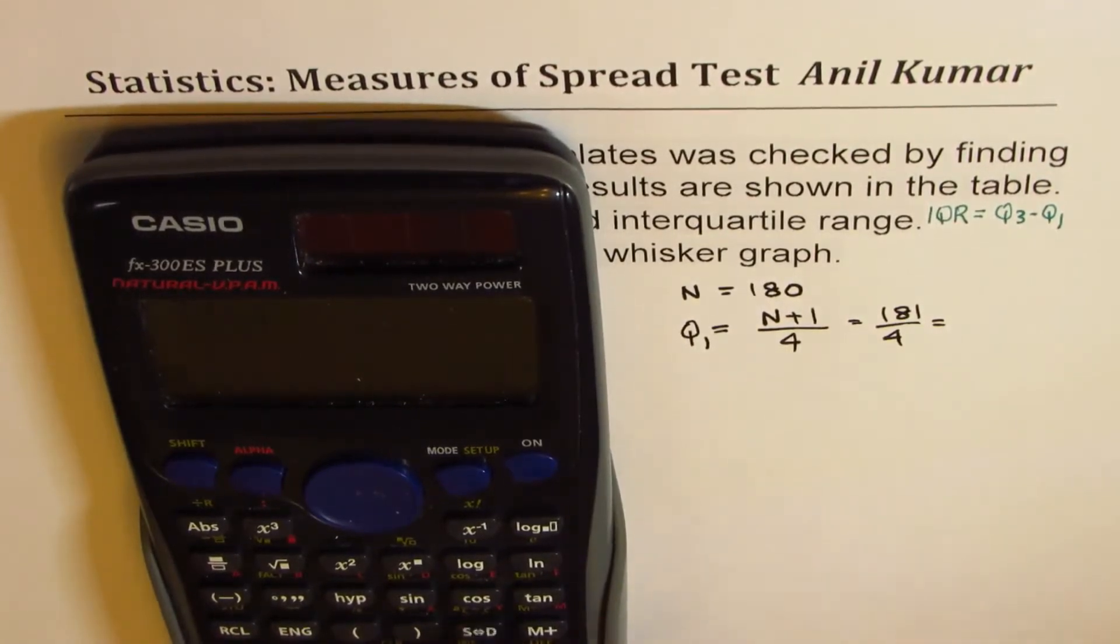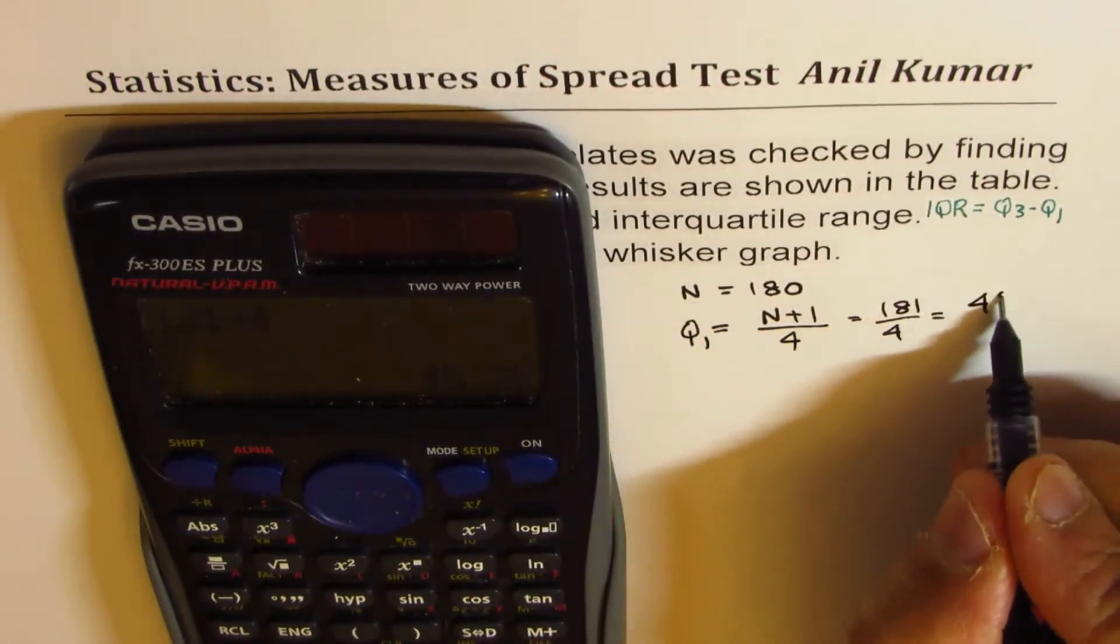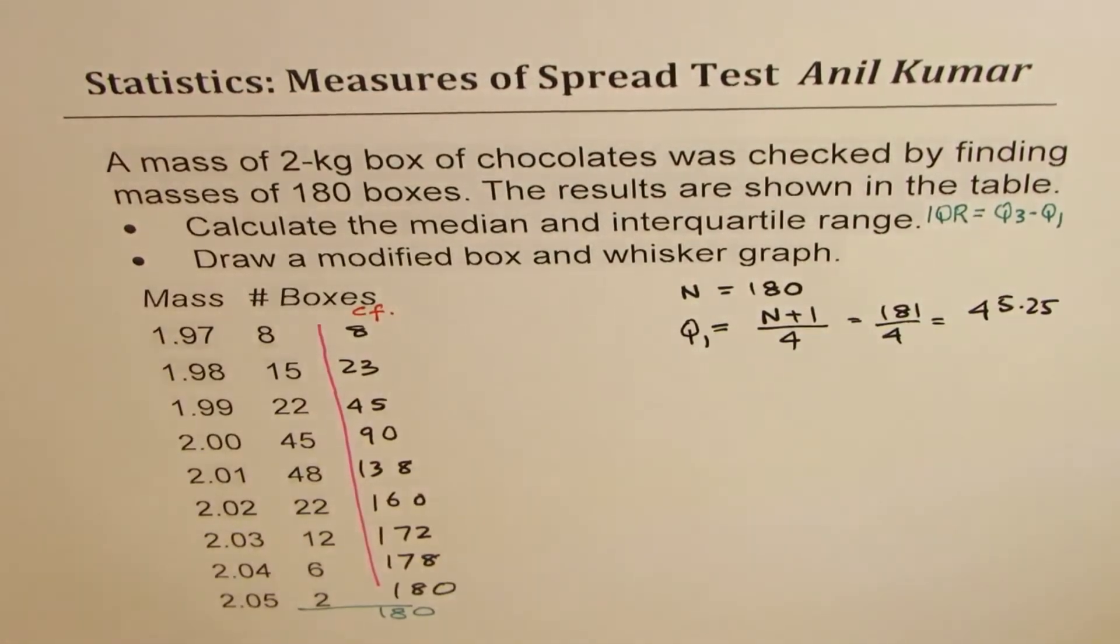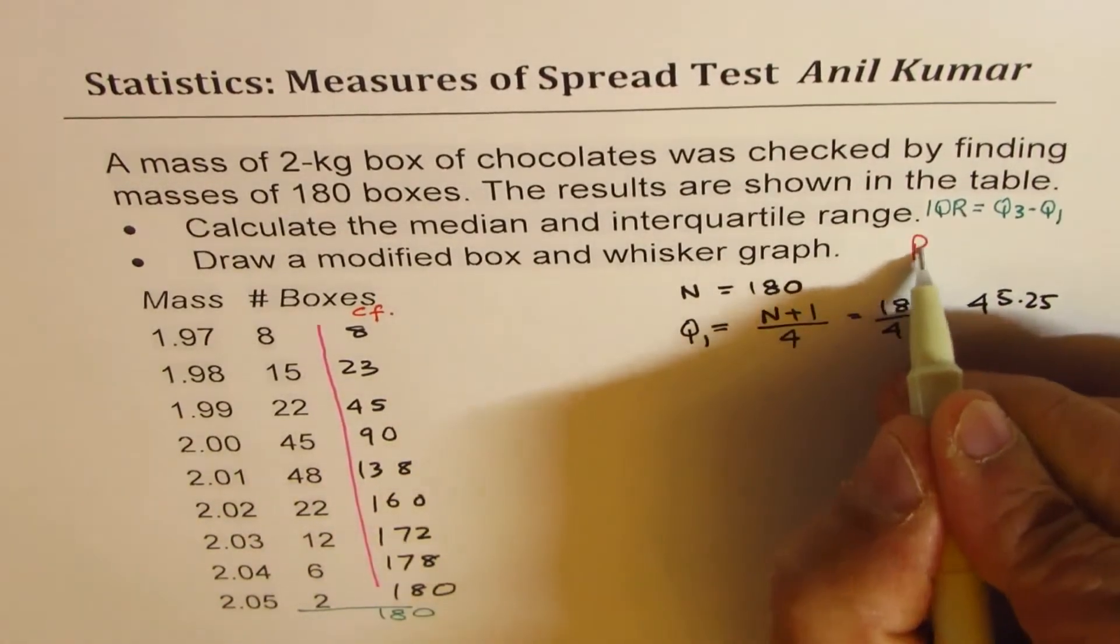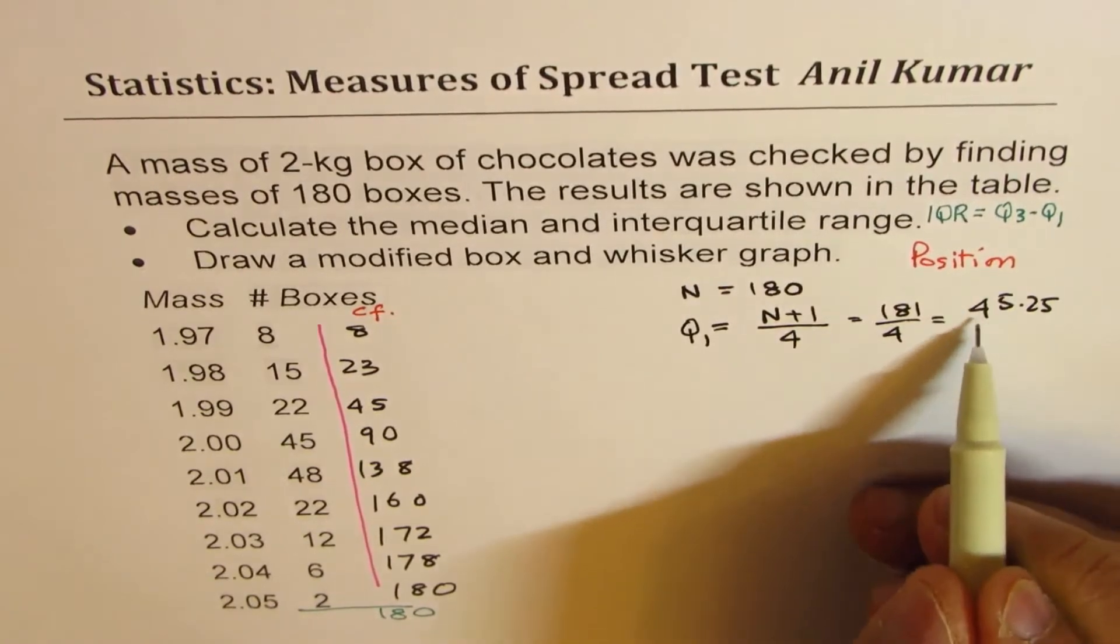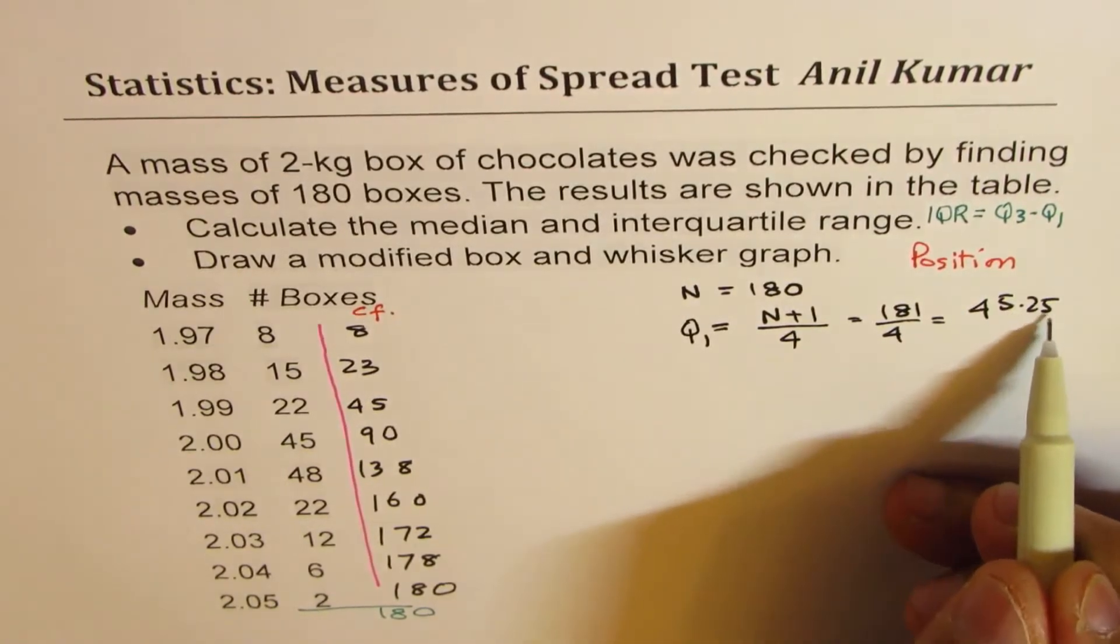Now whatever you get actually is not the answer but it is a position. So we are looking for the element or the data element at 45.25.